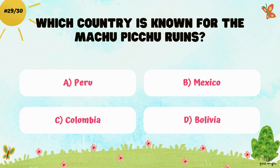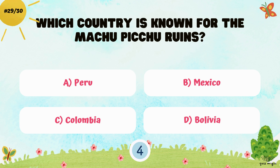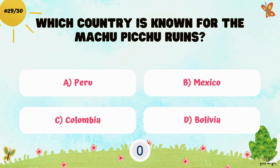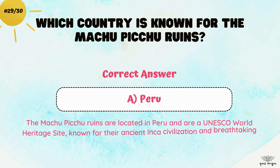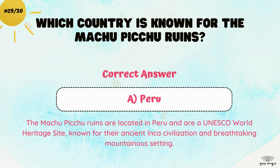Which country is known for the Machu Picchu ruins? The correct answer is A. Peru. The Machu Picchu ruins are located in Peru and are a UNESCO World Heritage Site, known for their ancient Inca civilization and breathtaking mountainous setting.